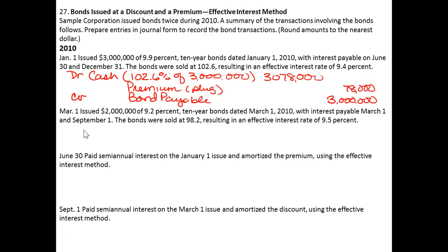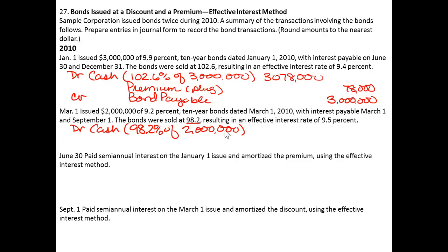On March 1, we issued a different bond. It's a $2 million, 9.2%, 10-year bond, and the bond was sold at 98.2. So we're going to debit cash for 98.2% of $2 million. This bond was sold at a discount, and the amount is $1,964,000.